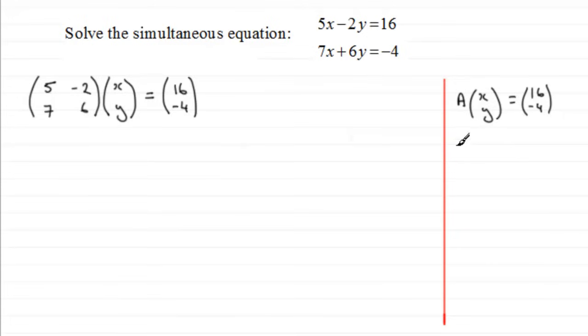Now to solve this equation here to get (x, y), what we need to do is multiply both sides on the left by the inverse of the matrix A. In other words, A^(-1) there, multiplied by A, multiplied by (x, y) would give us the inverse of A times (16, -4). And we should know that the inverse of a matrix times A is the identity matrix I.